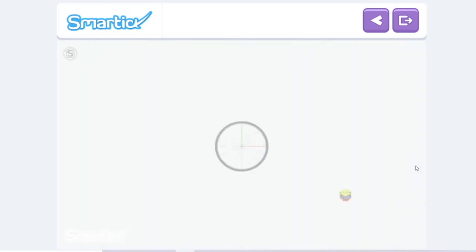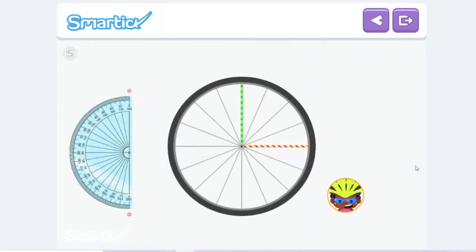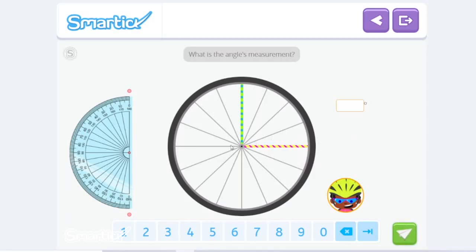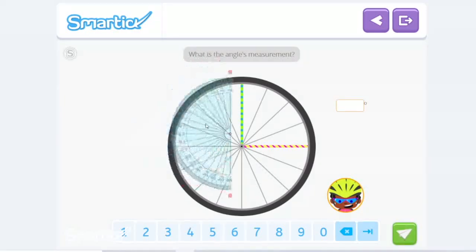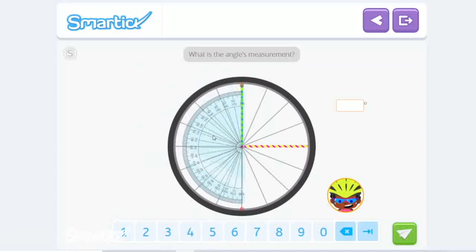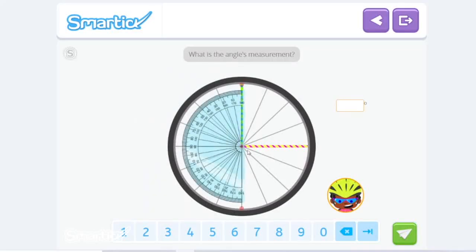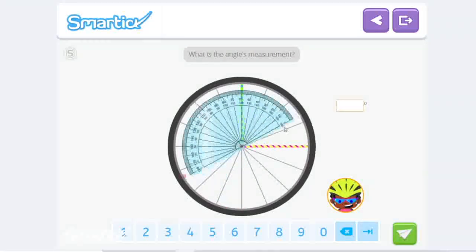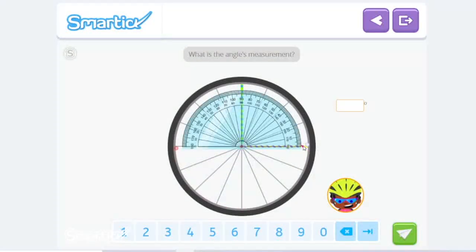Now you try. Measure the right angle formed by the decorations on Zoe's wheel. What is the angle's measurement? Let's grab the protractor. We have to make sure that it is aligned in the vertex. Let's turn it so it aligns horizontally. And reading it counterclockwise, we can see that it reads 90 degrees.